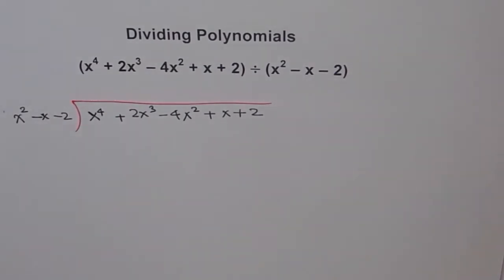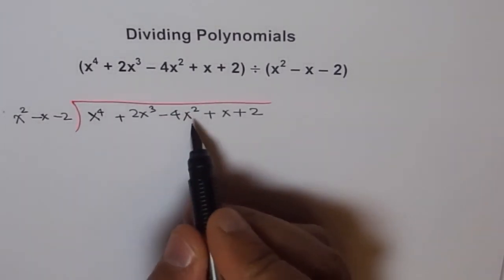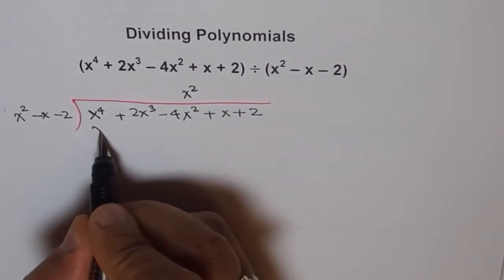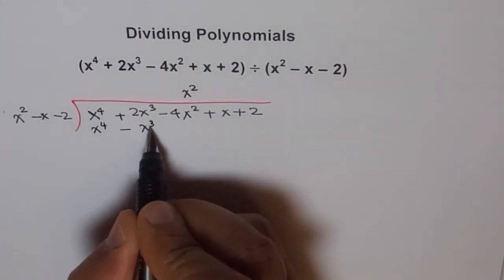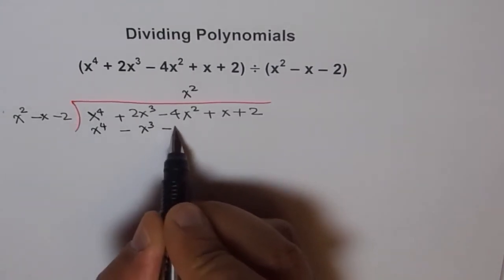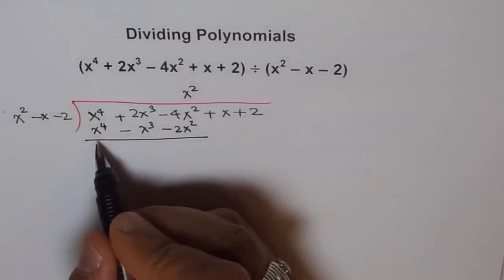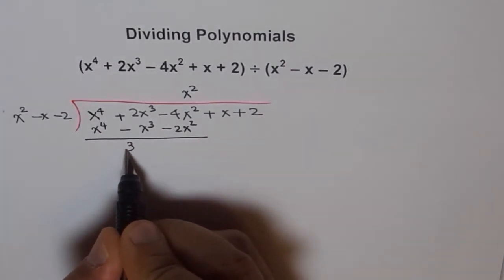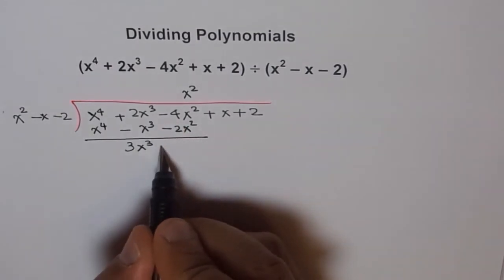With these 3 terms, we try to factor out the first one. That should be x squared. So let us multiply this with x squared. X squared times the divisor gives x to the power of 4 minus x cubed minus 2x squared. When you take that away, x to the power of 4 cancels to 0, as expected, and you get 3x cubed. And when you subtract, it is minus 2x squared.